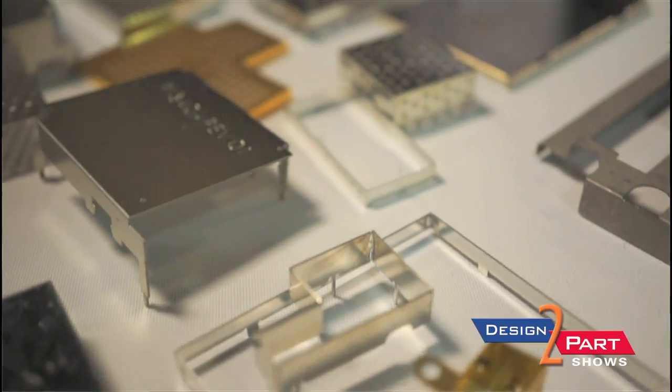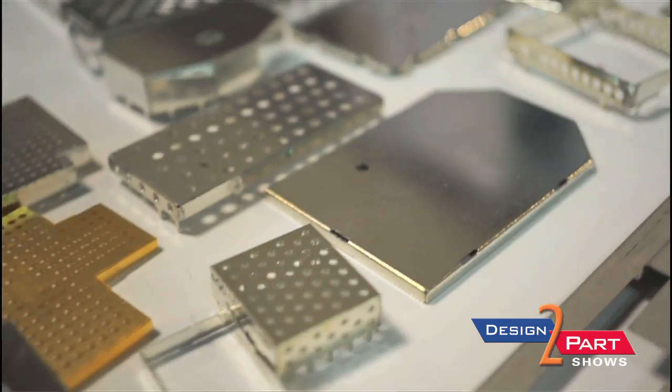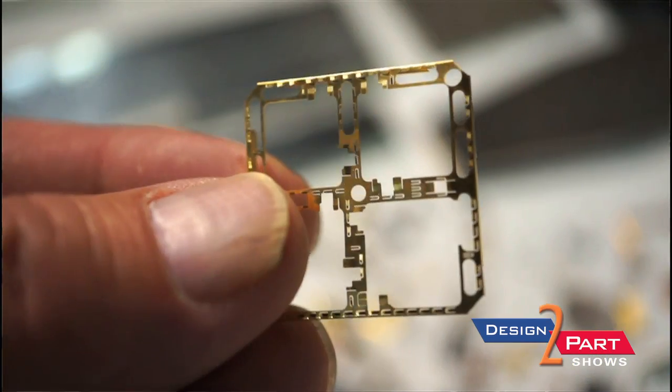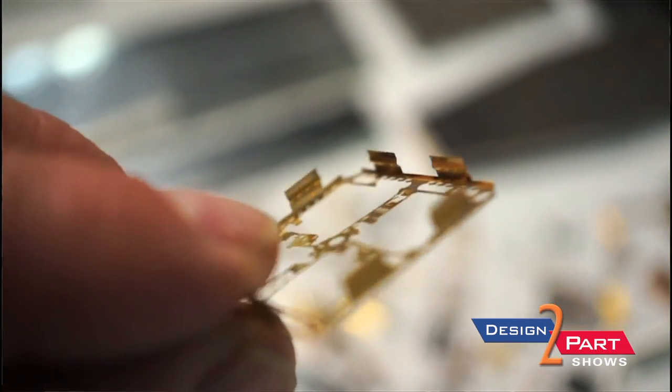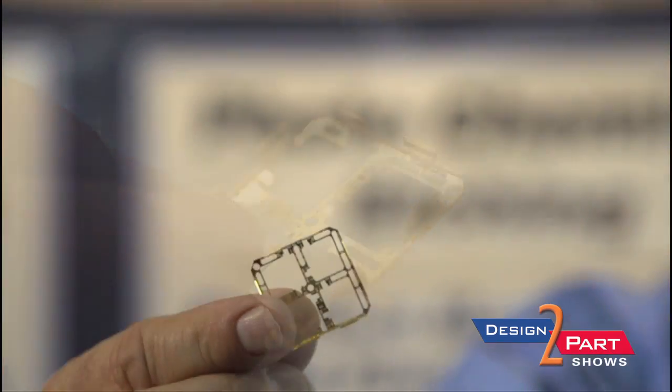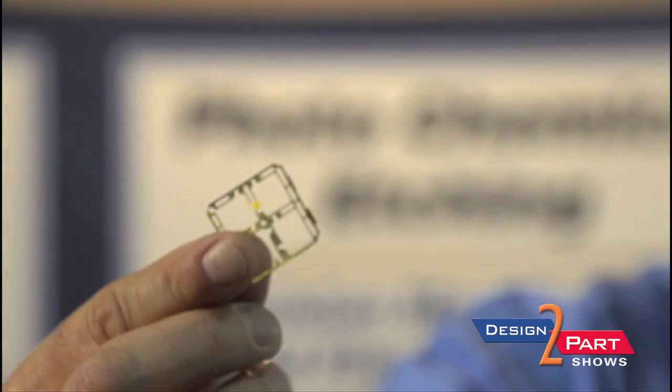A big part of our business is the ability to form to very complex shapes. This part is gold-plated. It has one hundred and twenty-six formed fingers, tiny formed fingers. Our military will use this in everything that flies.